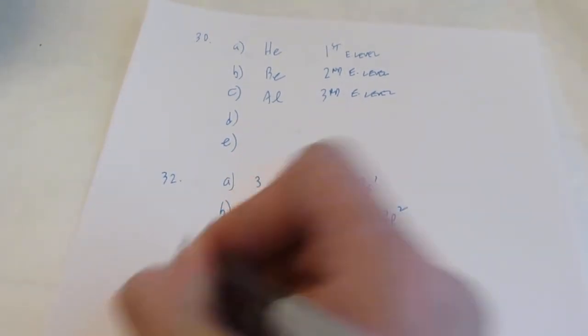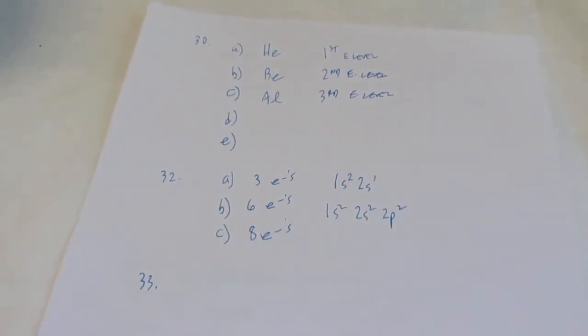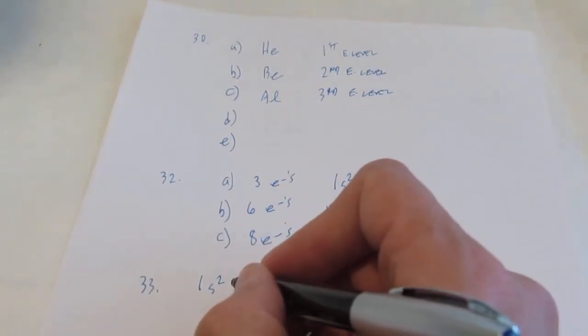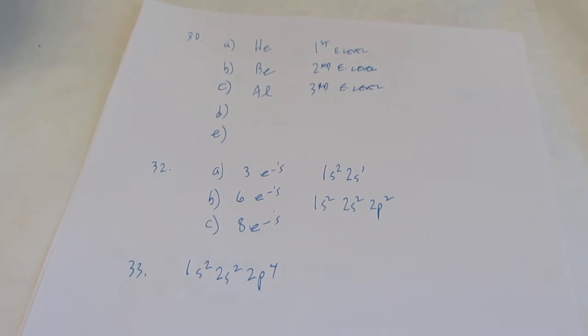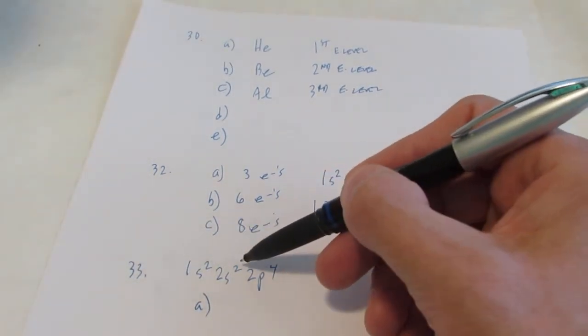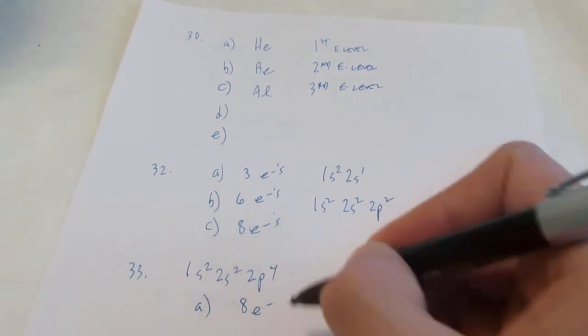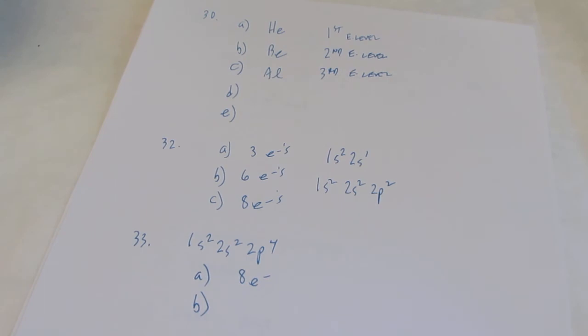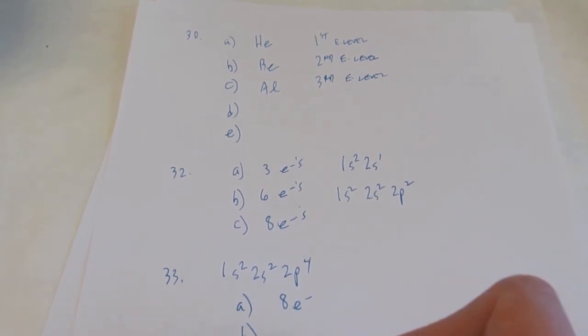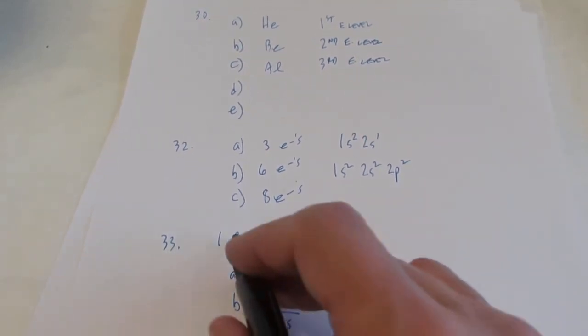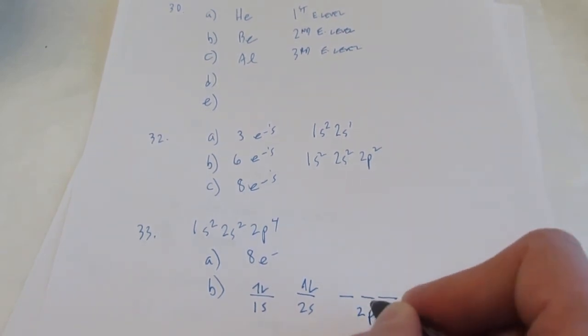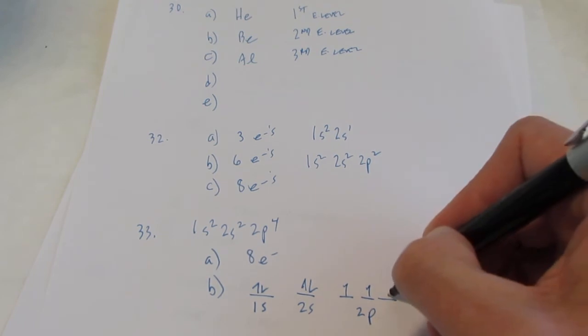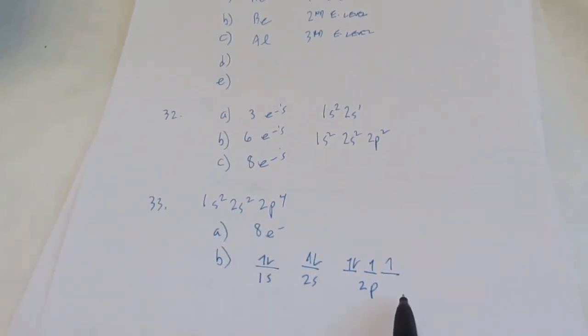The next one is number 33. Thirty-three says, this electron configuration is given: 1s2, 2s2, 2p4. So that's given to you. How many electrons are in each atom here? Well let's see, two plus two plus four, that's eight electrons. That was easy. Letter B says, write the orbital notation for oxygen's electron configuration. So the orbital notation includes these lines here for each orbital. The 1s has a pair, the 2s has a pair. And remember, the P sublevel has three orbitals. There's one, two, three, four electrons. So that's the orbital notation for oxygen.